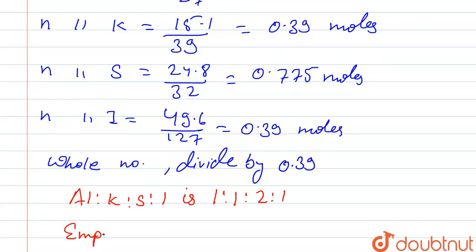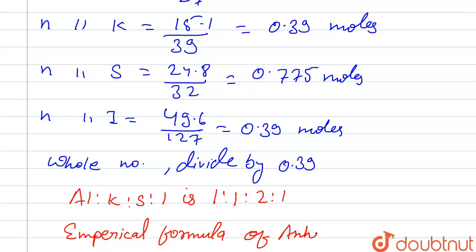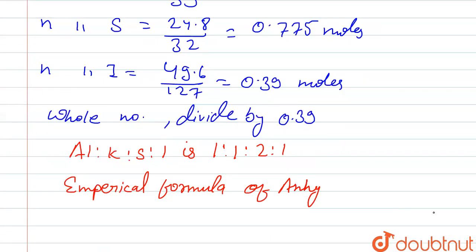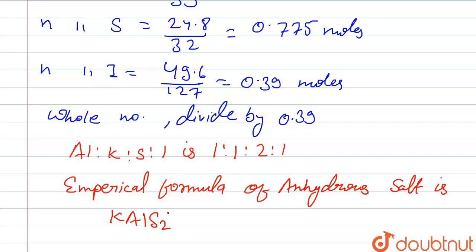So the empirical formula of the anhydrous salt is AlKS₂I.